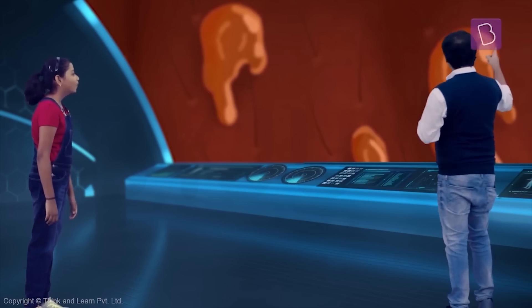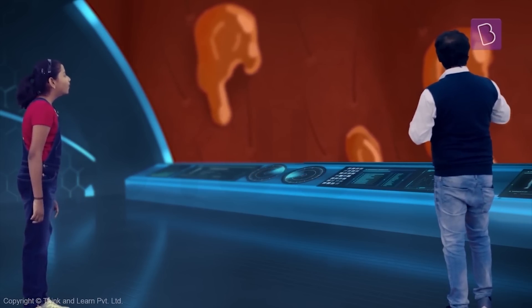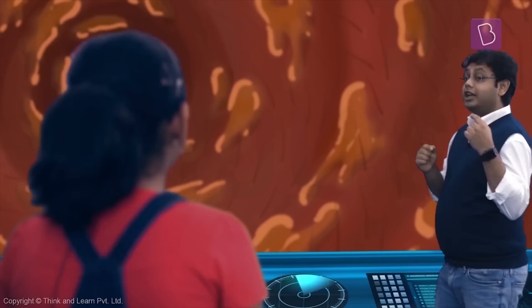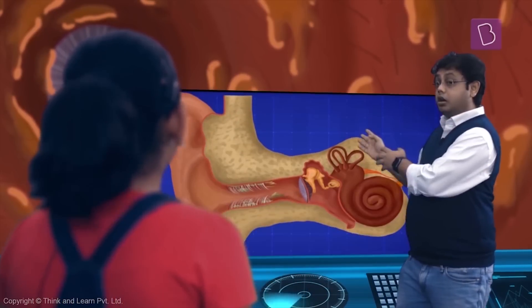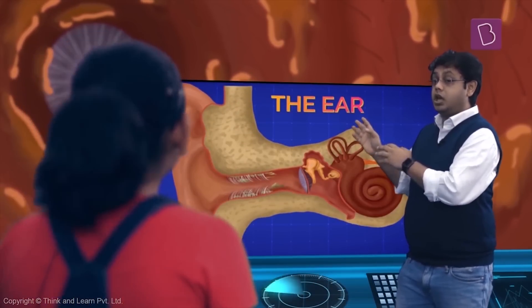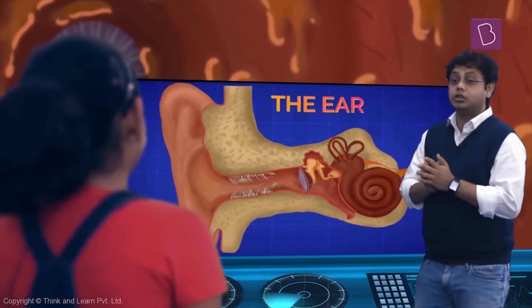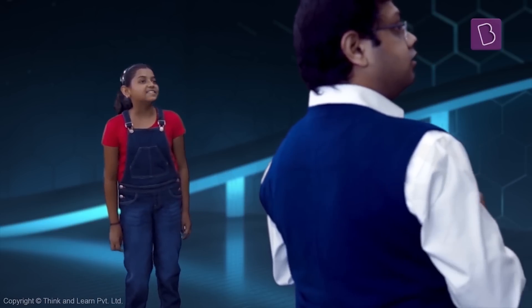Whoa! Can you now guess where we are headed? The ear. That is correct. I thought for you to make a robot that looks just like a human being, or that functions just like a human being, it's best for you to understand how the sense organs work. The ear is one of the sense organs, and that is what I thought we will start off with. The sense organs!